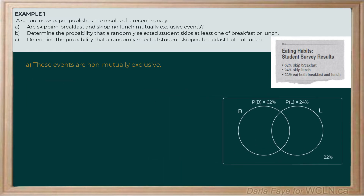Part B is asking us to determine the probability that a randomly selected student skips at least breakfast or lunch. The part of this Venn diagram that represents students who skip one or the other or both are the favorable outcomes found inside our two sets. We know how many students skip neither, so we can use that information to figure out the probability of skipping at least breakfast or lunch.